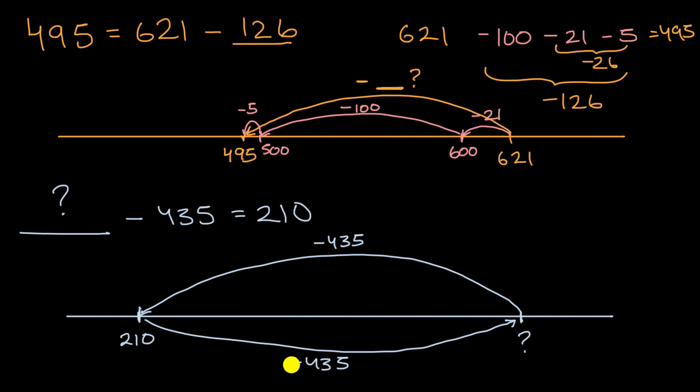Well, one way to do it is first we can add 400. I'll do this in another color just for a little bit of variety. So first I'll add 400. So if I add 400, that would get us to 610.